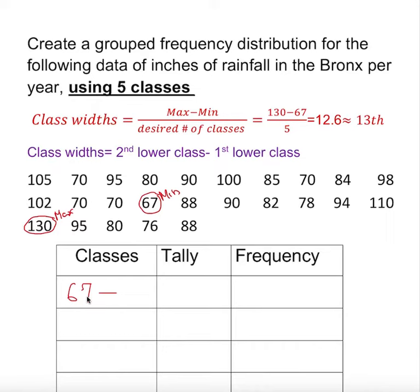So 13 numbers should be in between that range. 67 to where should I land? You add. Your class width is 13, so 67 plus 13 is 80. Since this is 80, that number cannot be 80, it's going to be overlapping, so it should be 79. So that should be 79.